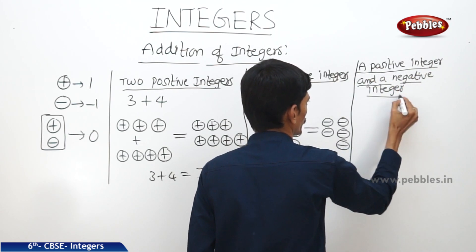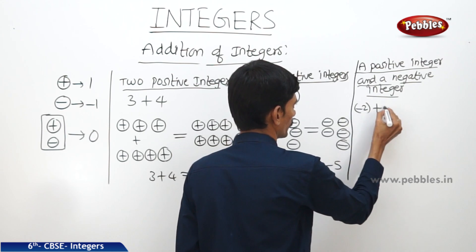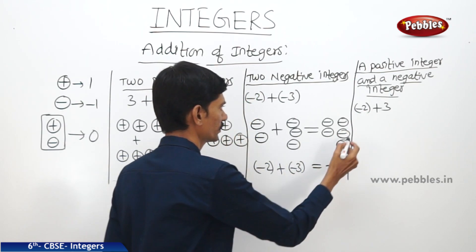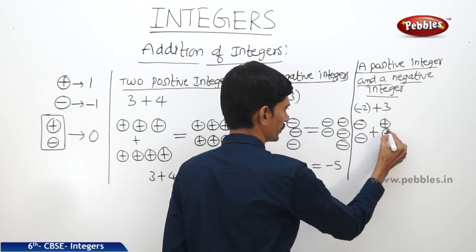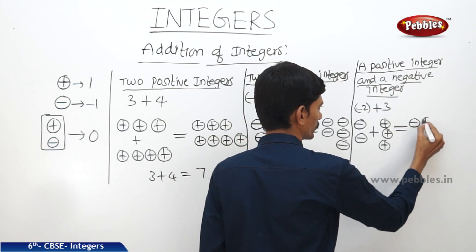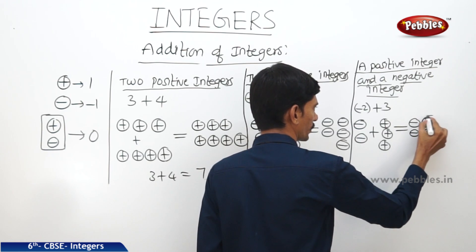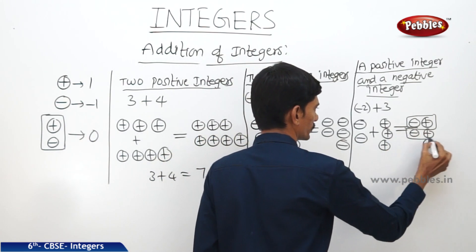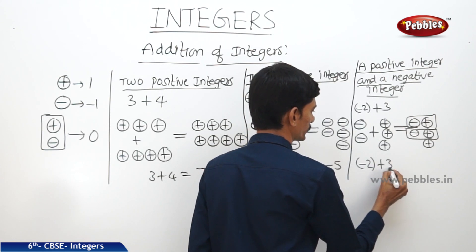For a positive integer and a negative integer, we take the example minus 2 plus 3. For minus 2, we take two negative signs, and for plus 3, we take three positive signs. Then we pair each minus with a plus — minus with plus gives zero, minus with plus gives zero — and we still have one plus remaining. So minus 2 plus 3 equals 1.